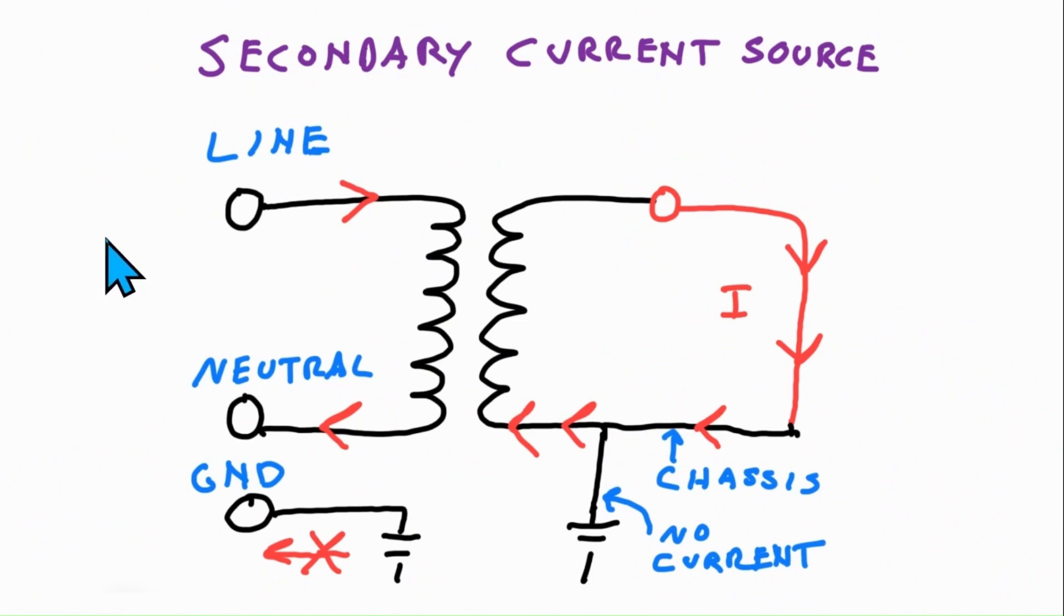The reason appliances are able to use a grounded chassis as an intentional path for current flow is because the source of current is from a secondary circuit like this. This is an isolation transformer that represents a secondary circuit. It could be a spark module, a DSI module, or just be a transformer.